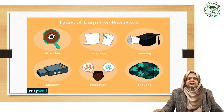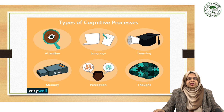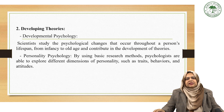The cognitive processes that we study with the help of basic research include attention, language learning, memory, perception and thought. These are the aspects of cognitive processes that we understand in a better way with the help of basic research.